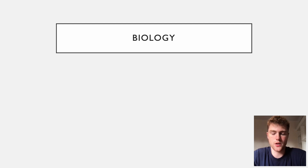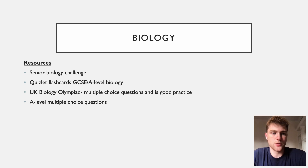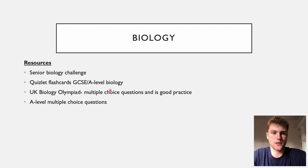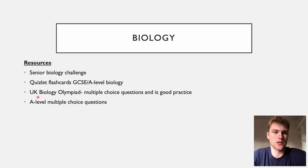On to the last section: biology. Resources include A-level multiple choice questions online, which you can find divided by topic to target weaker areas. The UK Biology Olympiad is your number one resource — multiple choice questions pitched at the right level. Also use Quizlet flashcards for A-level biology, and the Senior Biology Challenge, which is similar to the Biology Olympiad but easier. Pick whichever is right for your stage of revision.